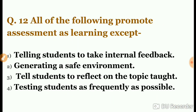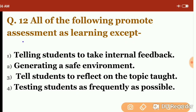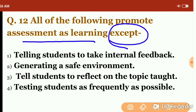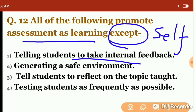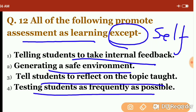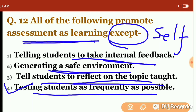Question twelve: all of the following promote 'assessment as learning' except — telling students to take internal feedback; generating a safe environment; telling students to reflect on the topic taught; or testing students as frequently as possible. Assessment as learning is centered on the student's self-reflection and self-feedback. Internal feedback, a safe environment, and reflection are all student-centered. Testing as frequently as possible shifts the work to the teacher, not the student. So the fourth option is the answer.